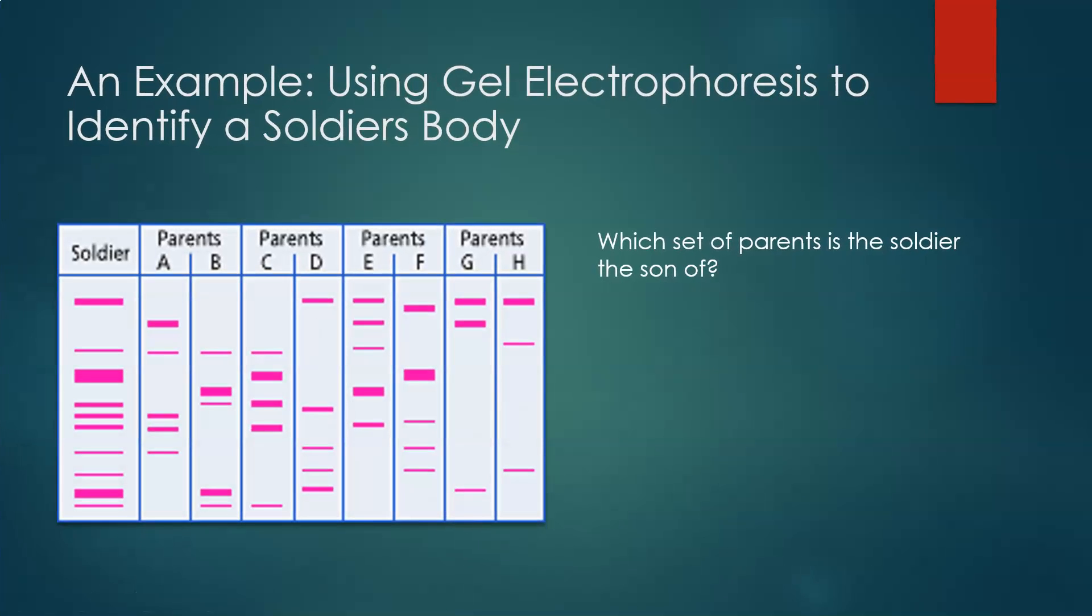Which set of parents do you think is the soldier the son of? Now we need to make the match to as many of the two parents' DNA as we can. In terms of the top, we would be looking more at this end. There's not many matches between these and there. Not a heap of matches there. I would be saying E and F look like the parents. What do you think?